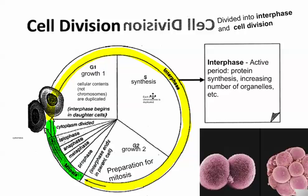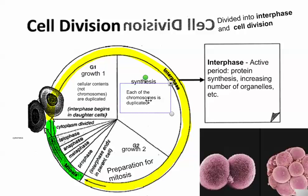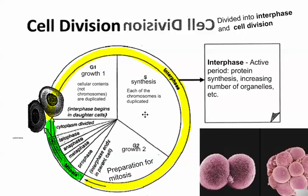When the cell is going to divide and splits into two, we want to make sure we have enough organelles. S phase is Synthesis — each of the chromosomes is duplicated. So for example, in a human cell there are 46 chromosomes. During S phase, each one of those 46 chromosomes grows a copy attached to it, so you'd technically have 46 × 2 = 92 strands of DNA. When those 92 split, you end up with 46 and 46, which is the correct number for a human body cell.